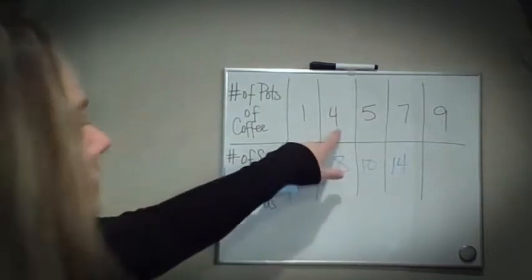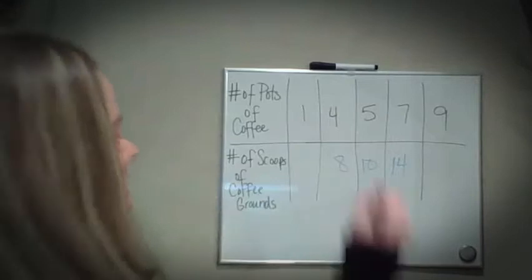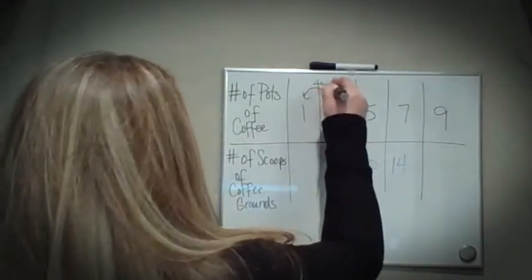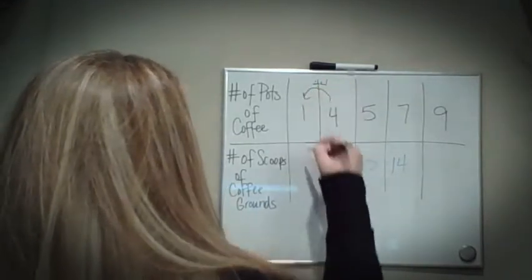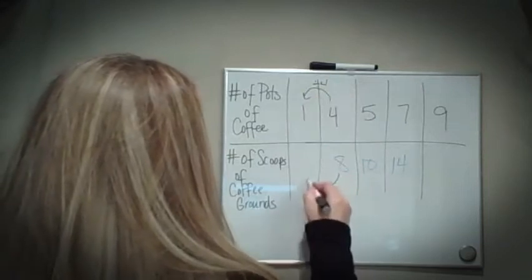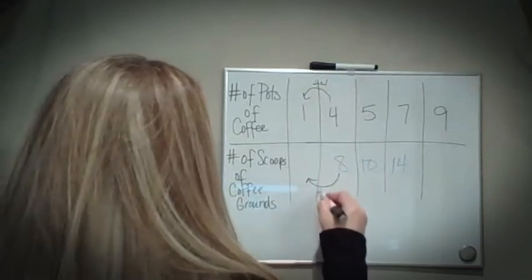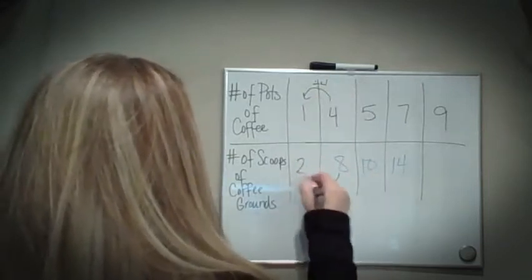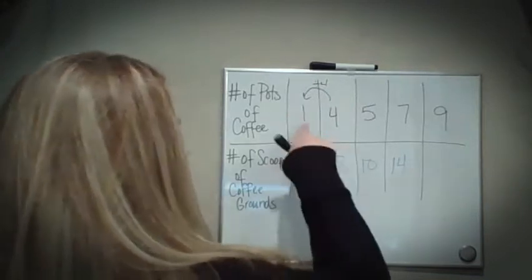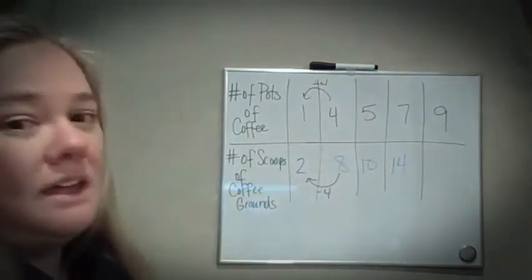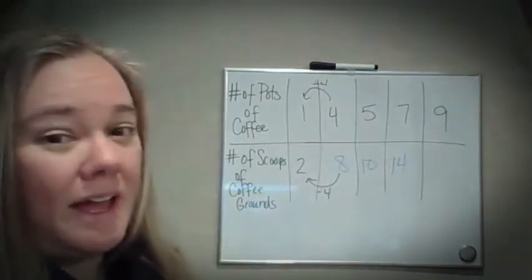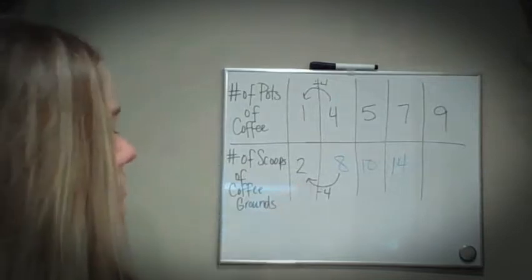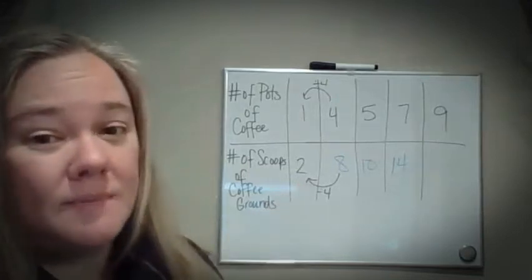To go from four pots of coffee to one, I'm going to use a division of four. Four divided by four is one. Therefore, I'm also going to divide by four here — eight divided by four is two.